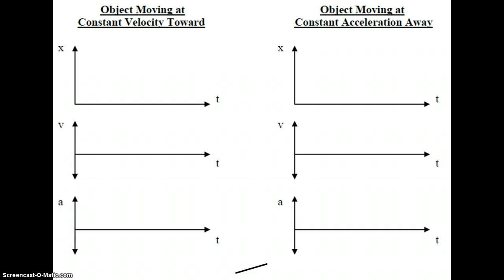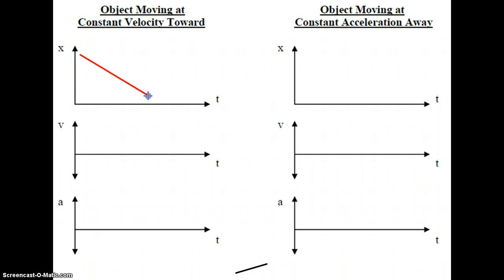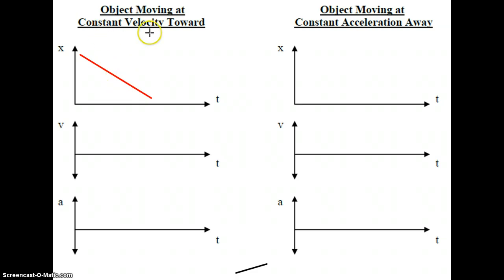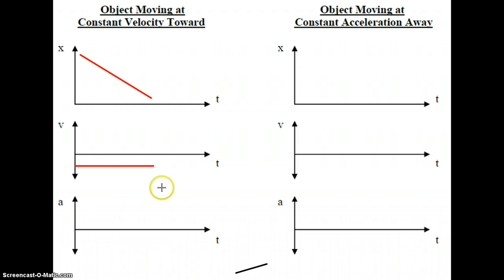Moving on to an object moving at constant velocity toward. Constant velocity means our line is going to be straight. Toward means our X numbers — our distance numbers — are going to be decreasing, so this would be a straight line negatively sloped, showing our X value is decreasing as time is increasing. Constant velocity again means we have a horizontal straight line, but this time it is below the time axis.